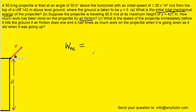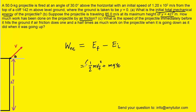To determine how much energy is being removed from the projectile, we use the expression: the final energy of the projectile minus its initial energy. For the final energy, the projectile is still moving and still has height, so we'll have kinetic and potential energies again. The final kinetic energy is one-half times mass times final speed squared, plus mass times g times final height. Then we subtract the initial energy determined in part A.